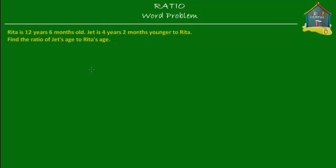Welcome to HomeCampus.com.sg. Here's a word problem. Rita is 12 years and 6 months old. Jet is 4 years and 2 months younger than Rita. Find the ratio of Jet's age to Rita's age.